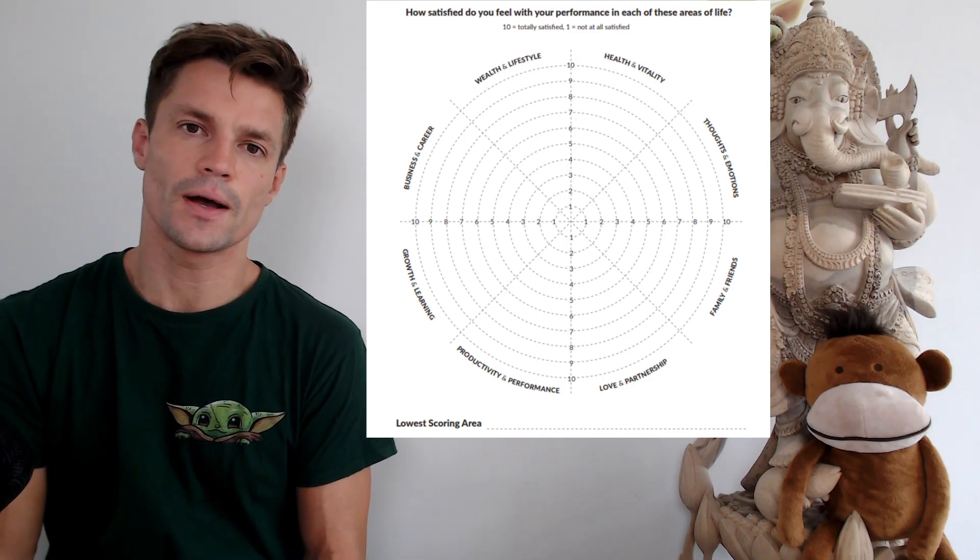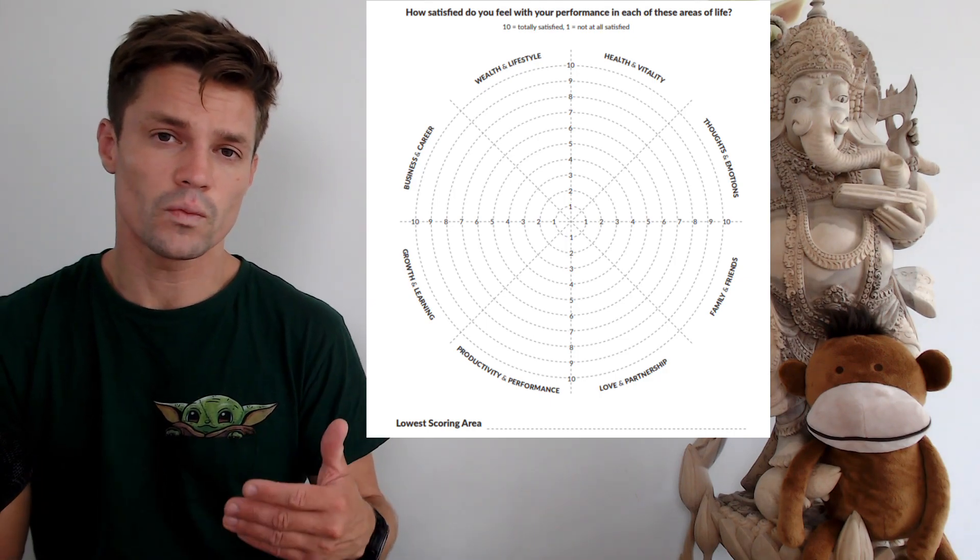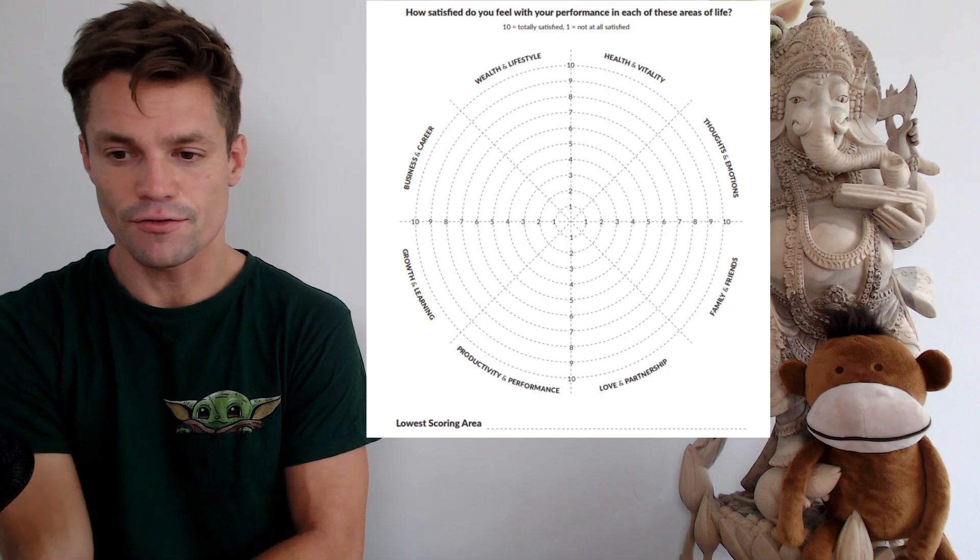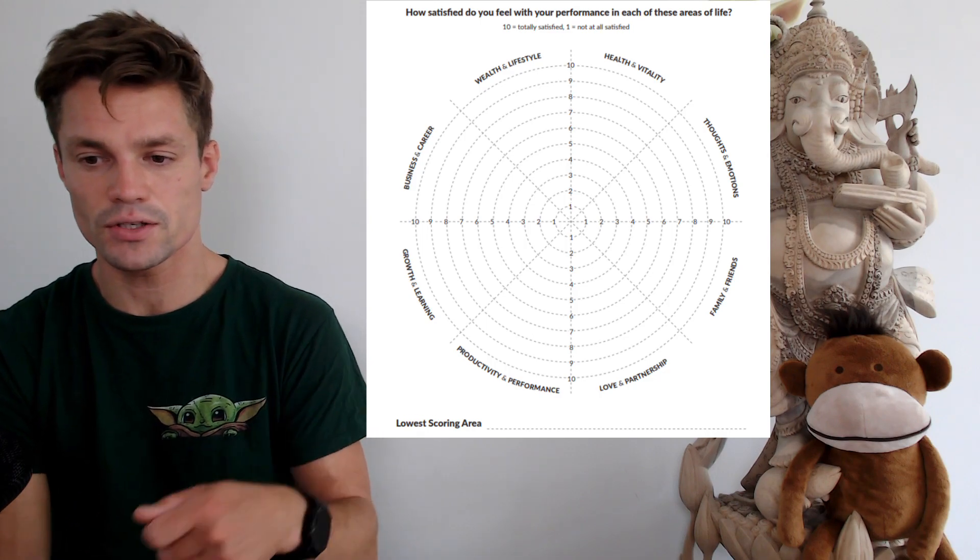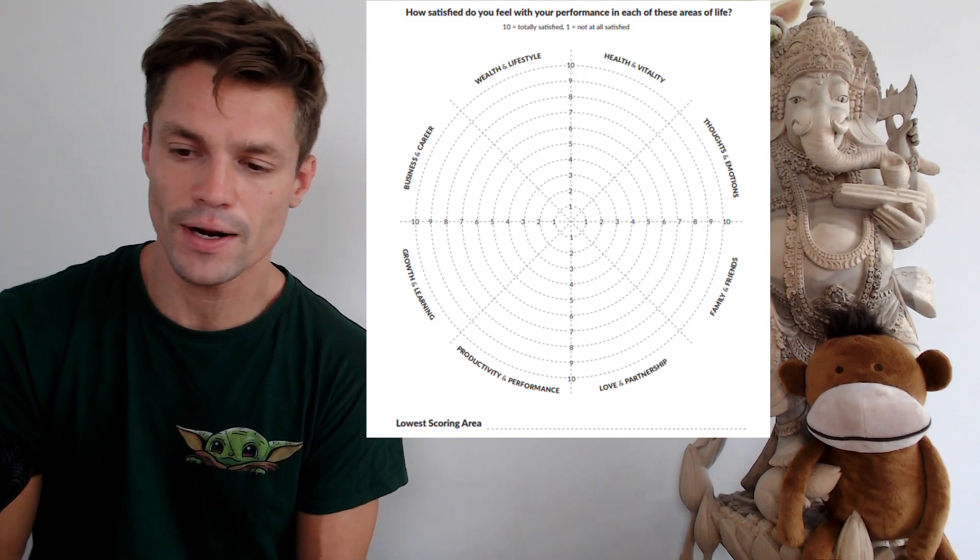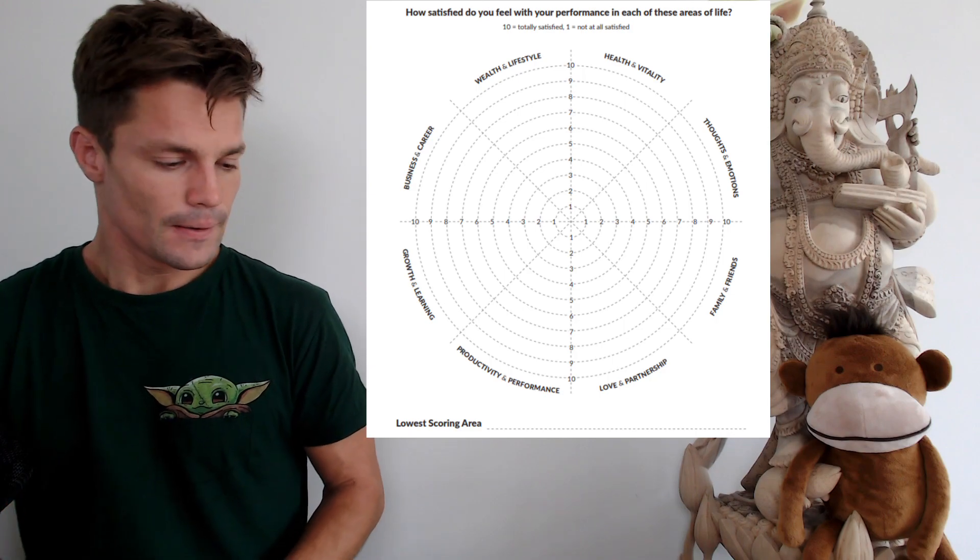Health and vitality, what grade would you give yourself? If it's a five, it's a five. If it's an eight, it's an eight. Do this for your thoughts and emotions, family and friends, and all these other categories you see in this wheel of life.